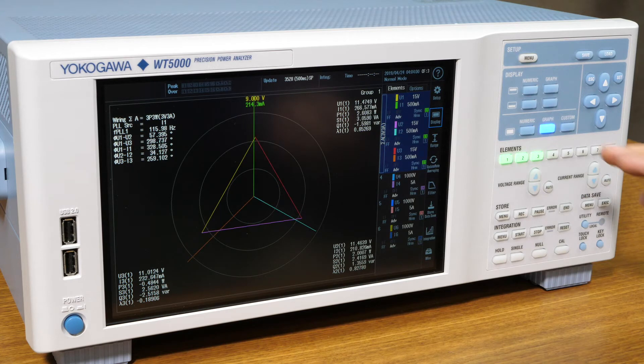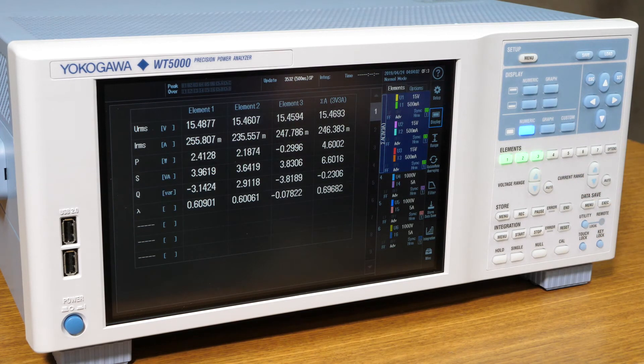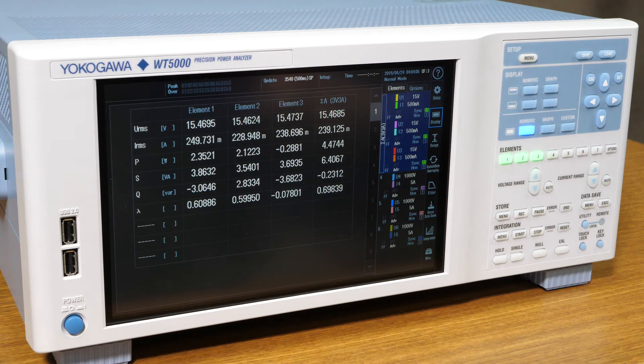Switching to the numeric display, we can see that P1 plus P2 equals sigma P. We also see that P3 is close to zero. Again, these readings are used in the internal calculations that the WT5000 is performing using Blondel's transformation and are not valid individual power measurements.